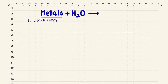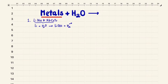Let's talk about lithium reacting with water. Lithium reacts with water and produces lithium hydroxide and hydrogen gas. We have to balance the equation, so we place a coefficient of 2: 2Li + 2H₂O → 2LiOH + H₂.